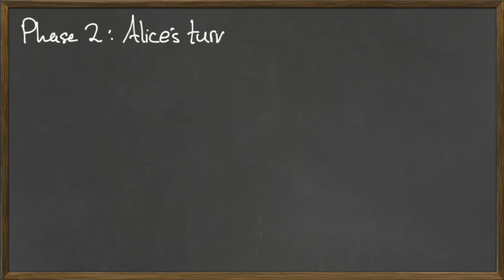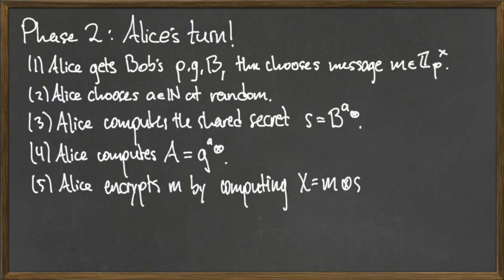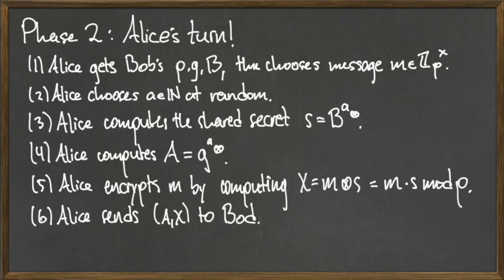In phase two, Alice takes over. Alice's first step is to retrieve Bob's publicly available prime p, generator g, and quantity capital B. Next, she chooses a message little m, which is an integer in the multiplicative group Z mod p. Then Alice chooses a natural number little a at random, and uses this to compute the shared secret little s, which is equal to Bob's capital B raised to Alice's little a power.